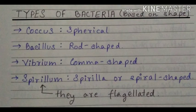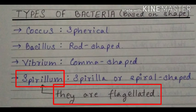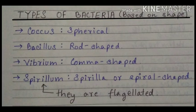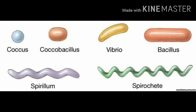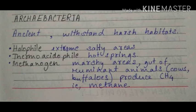Flagella is mainly found in the spiral shaped bacteria. A diagram here may compare the different shapes — namely Coccus, Vibrio, Bacillus and Spirillum — along with two similar shapes, Coccobacillus and Spirochete. Now let's move on to Archaebacteria.